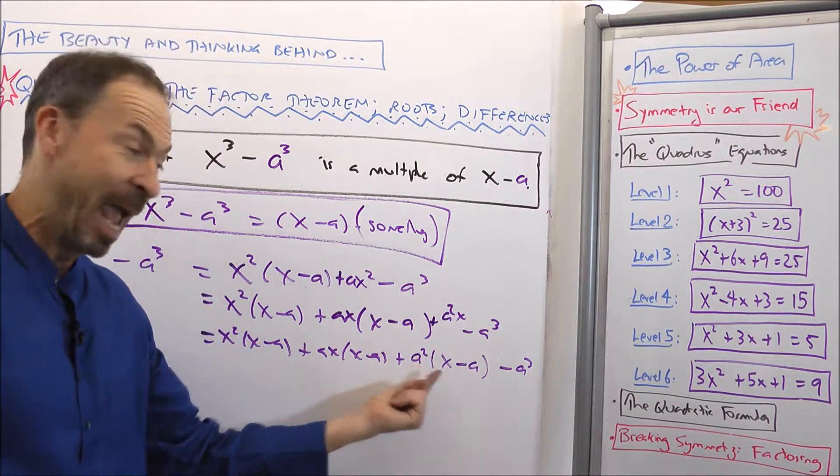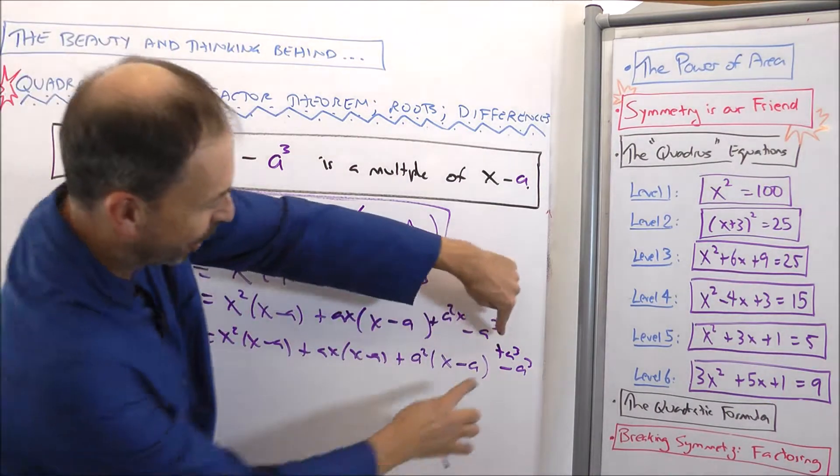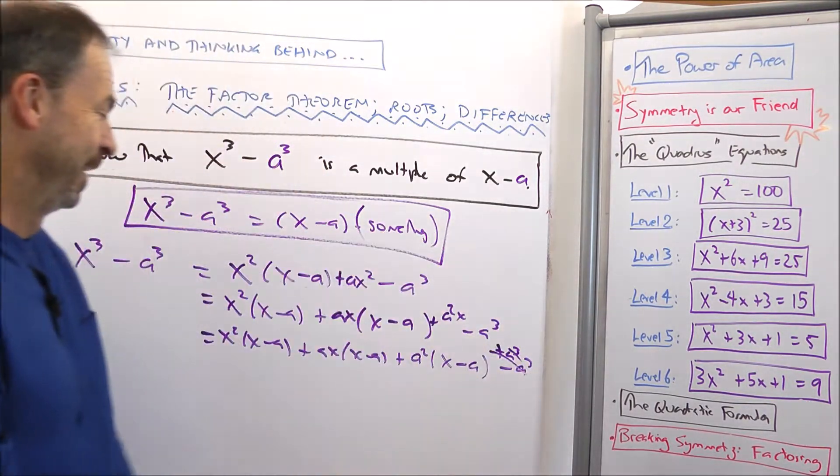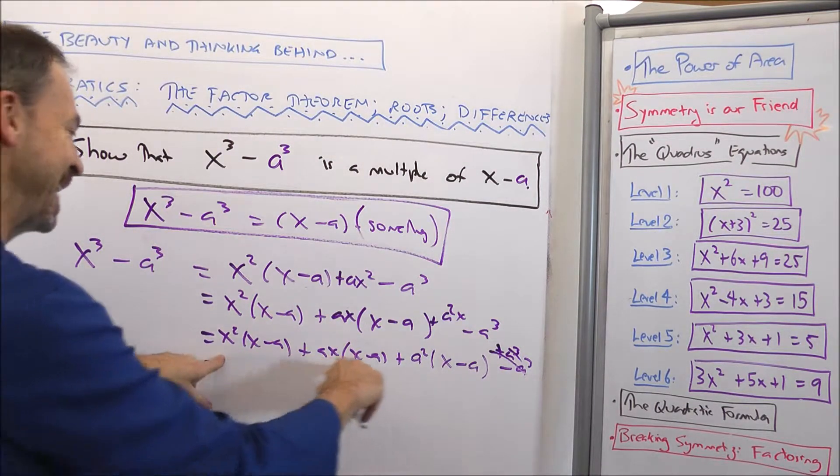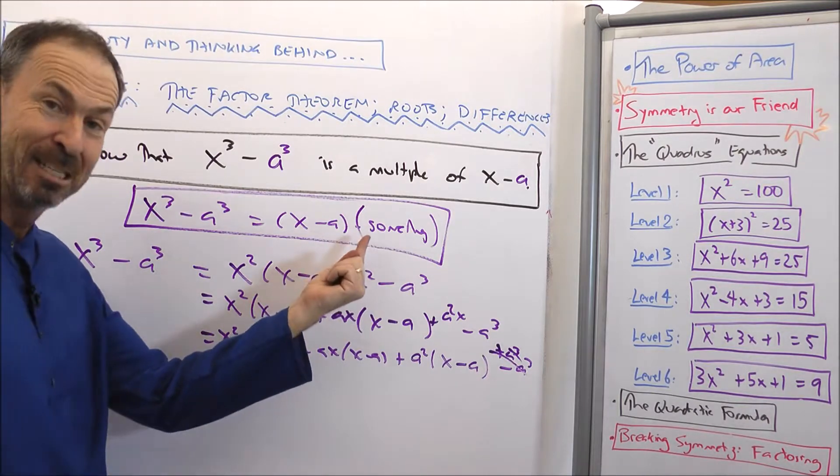Bother. So I better add in a positive a³ to counteract that. But look, the positive a³ and the negative a³ here cancel out. So actually, I can see it is an exact multiple of x minus a as we knew it had to be.